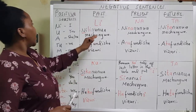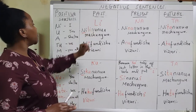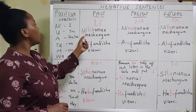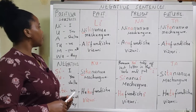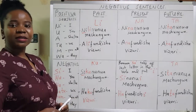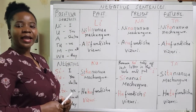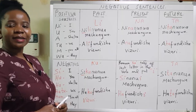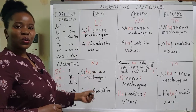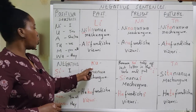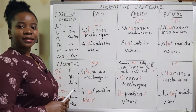Let's look at the first example: nilinunua machungwa. This is a positive sentence which means 'I bought some oranges.' If you want to say 'I didn't buy some oranges' in Swahili, we say sikunuua machungwa. We use ku for the negative in past tense.